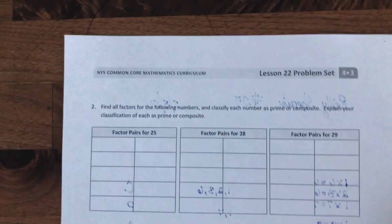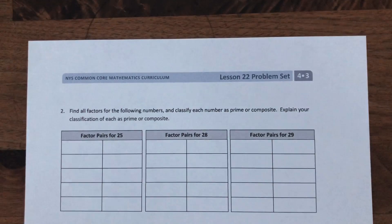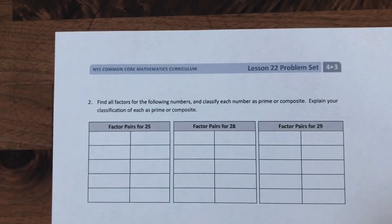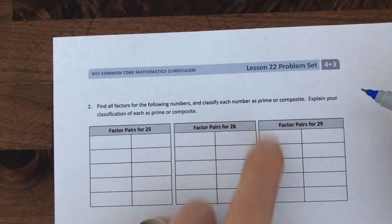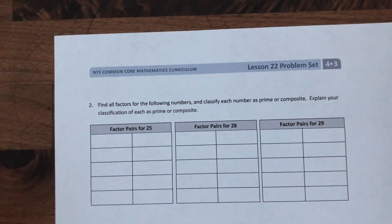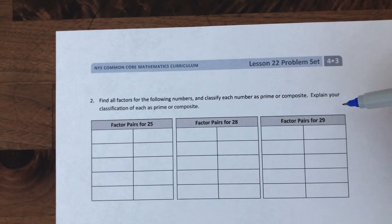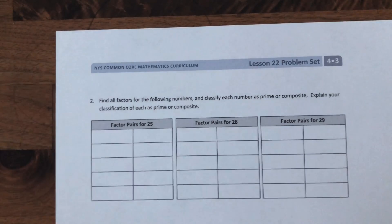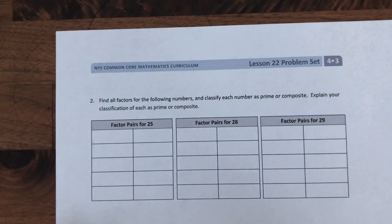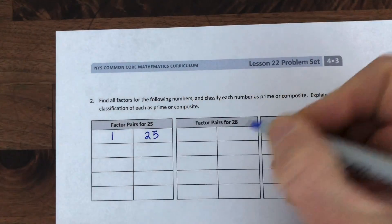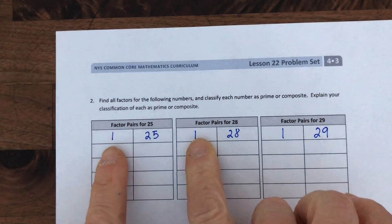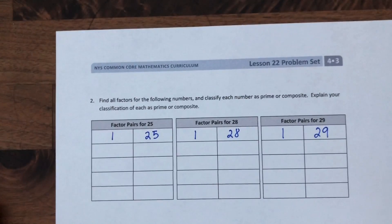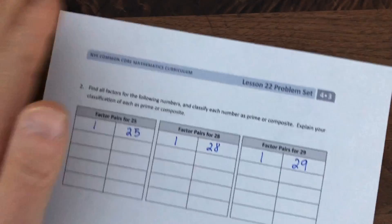Now we're on to the back of the same sheet of paper. The directions say: find all factors for the following numbers and classify each number as prime or composite, and explain your classification. I'll note that one is a factor of every single whole number, so I can write one times each number right off the bat for 25, 28, and 29.